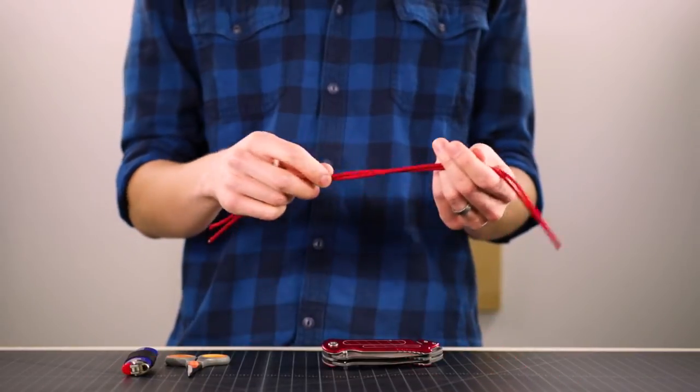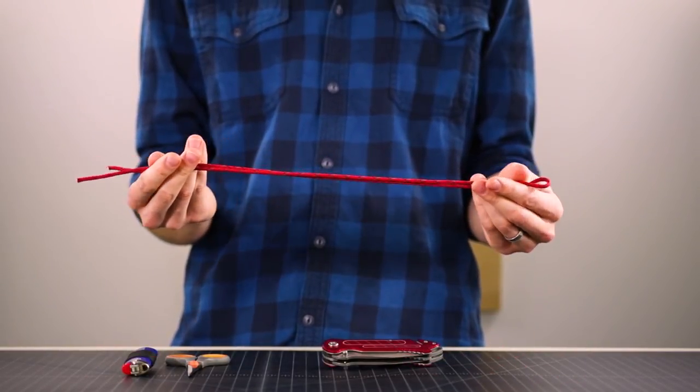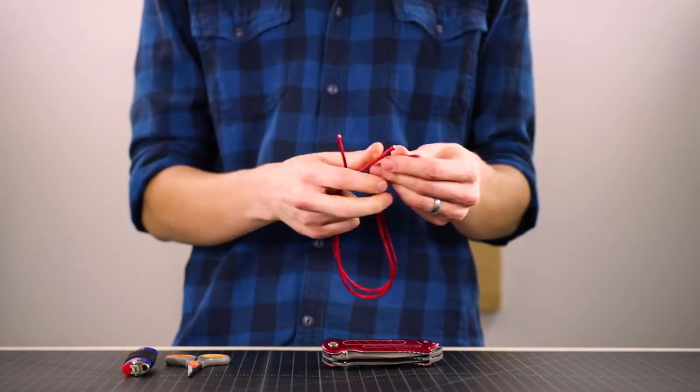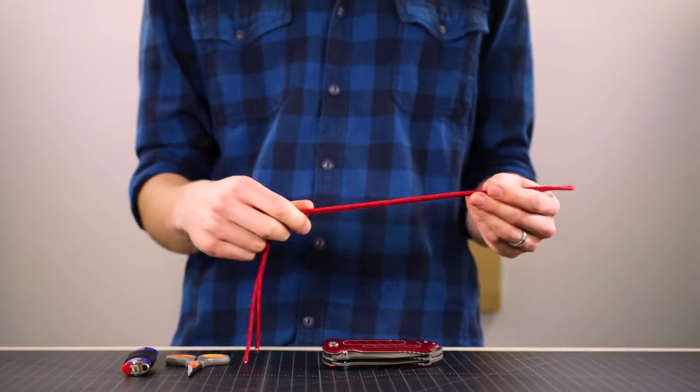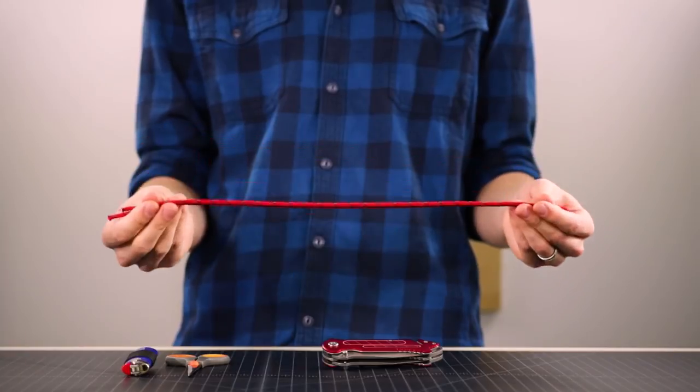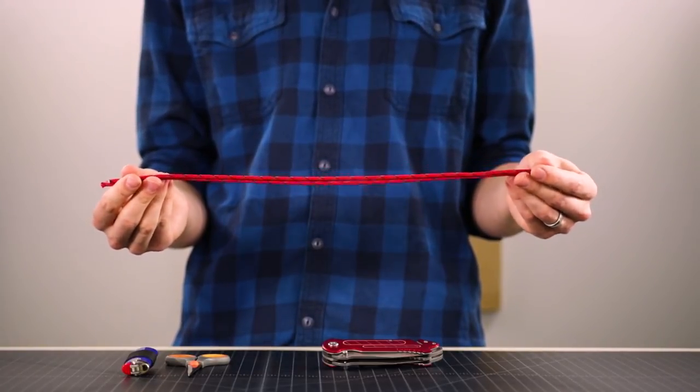This project really only takes two to three feet of paracord depending on how long you want. We're going to be making a shorter fob today. If you were to make a wrist lanyard you might need a couple more feet, but this is a good way to use up paracord scraps if you have a lot of those lying around.